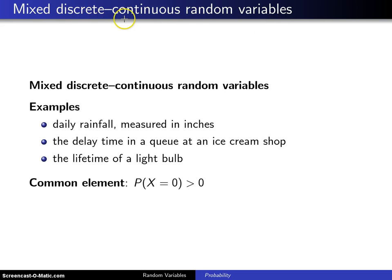It is part discrete and part continuous, and here are three examples. The first example is daily rainfall measured in inches. Since this is a measurement in inches of rainfall, you would think that would be a continuous random variable.